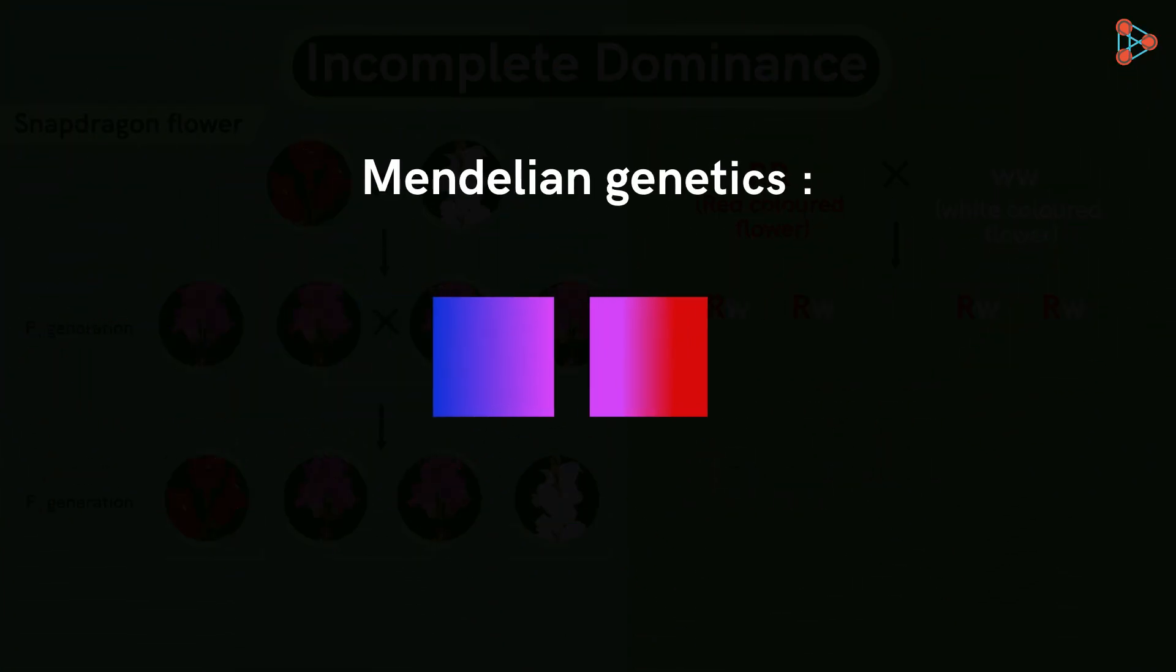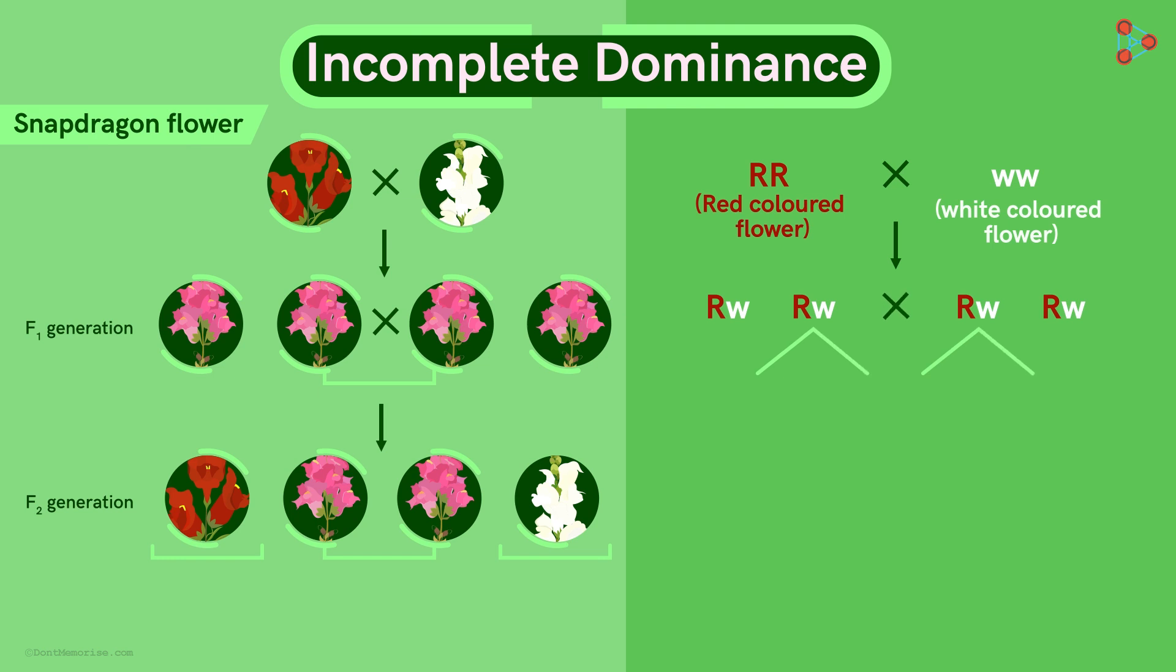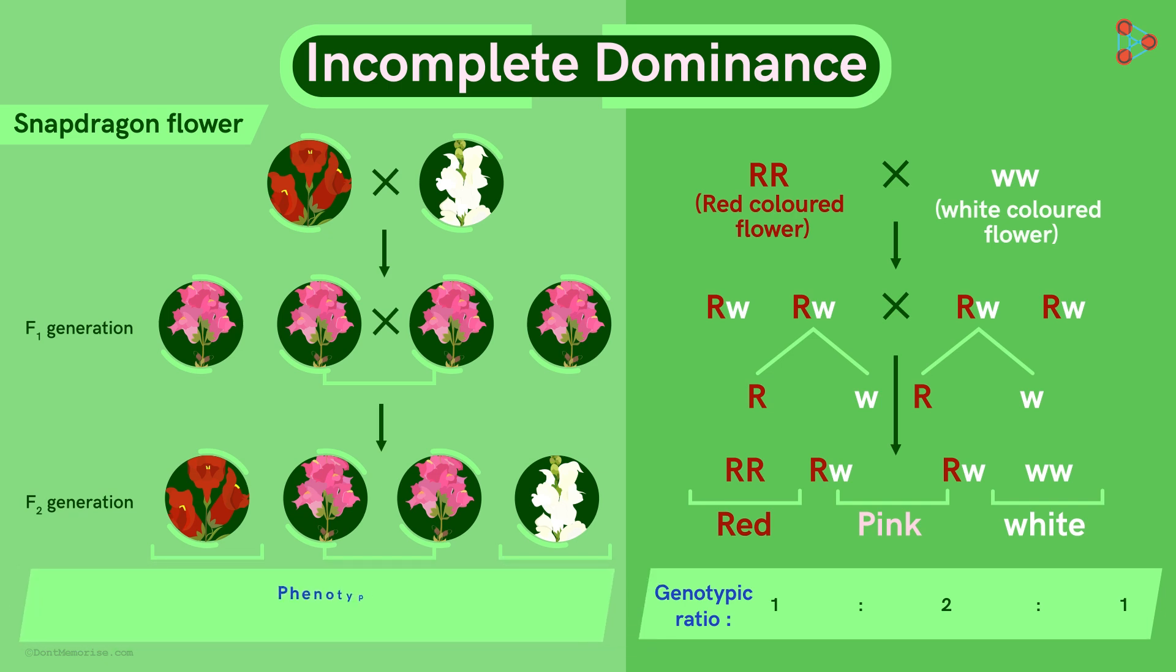That's because Mendelian genetics did not talk about blending of characters. However, on crossing any two from the F1 generation, we obtain the genotypic ratio of 1 to 2 to 1 in the F2 generation. Even though the phenotypic ratio is not 3 to 1, the genotypic ratio obtained is the same as we had obtained earlier.